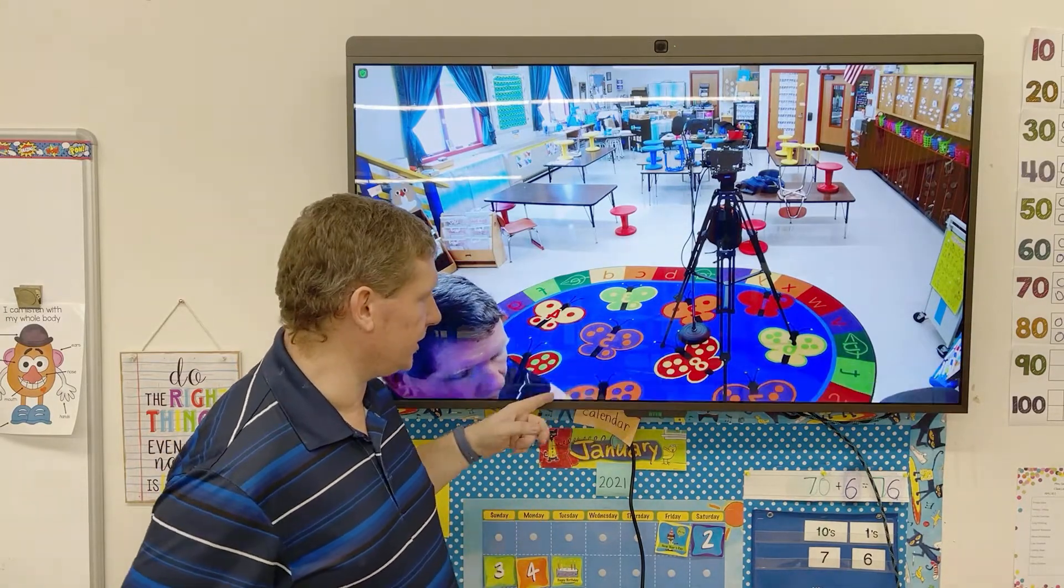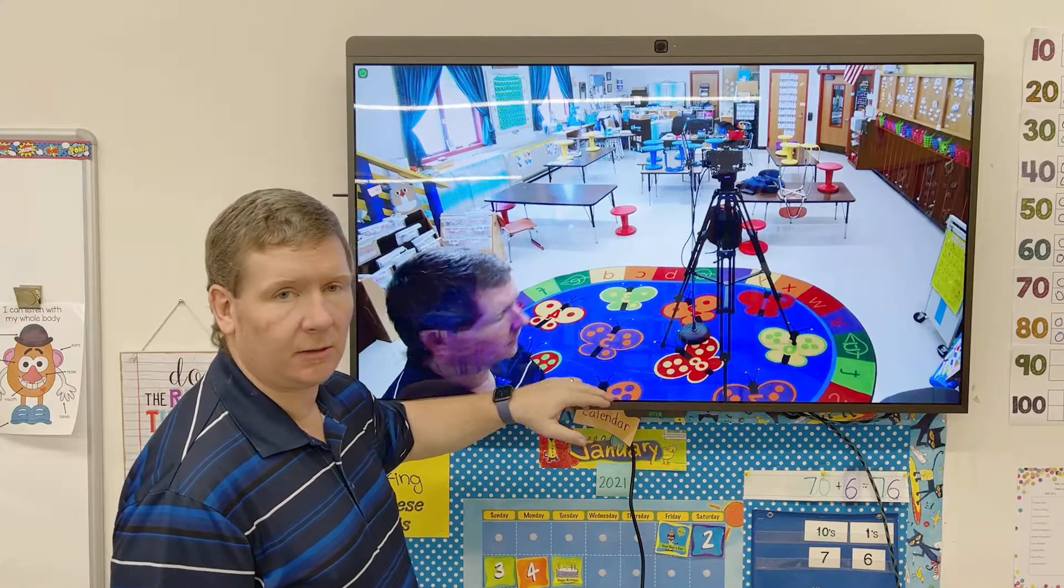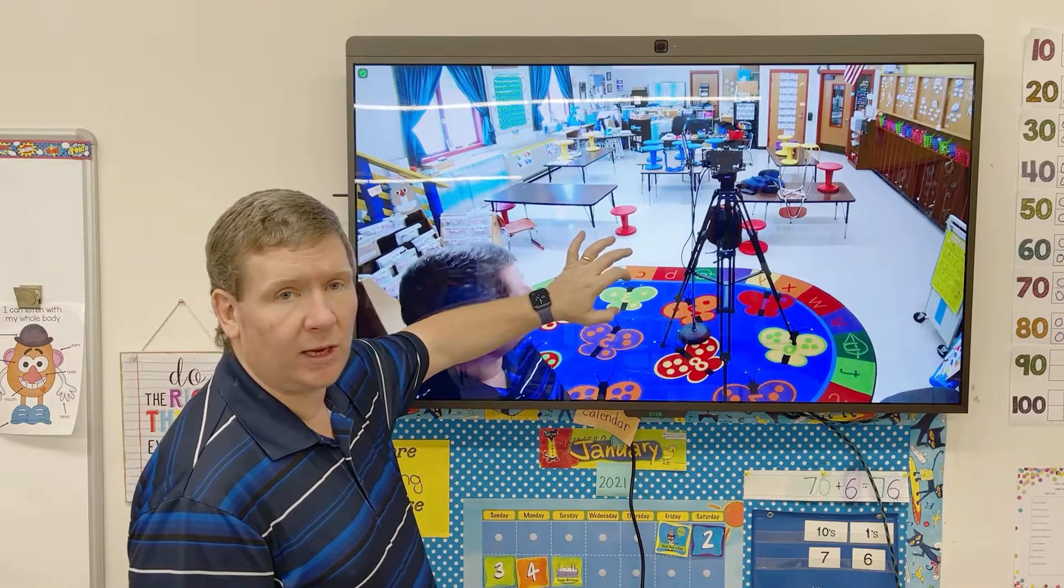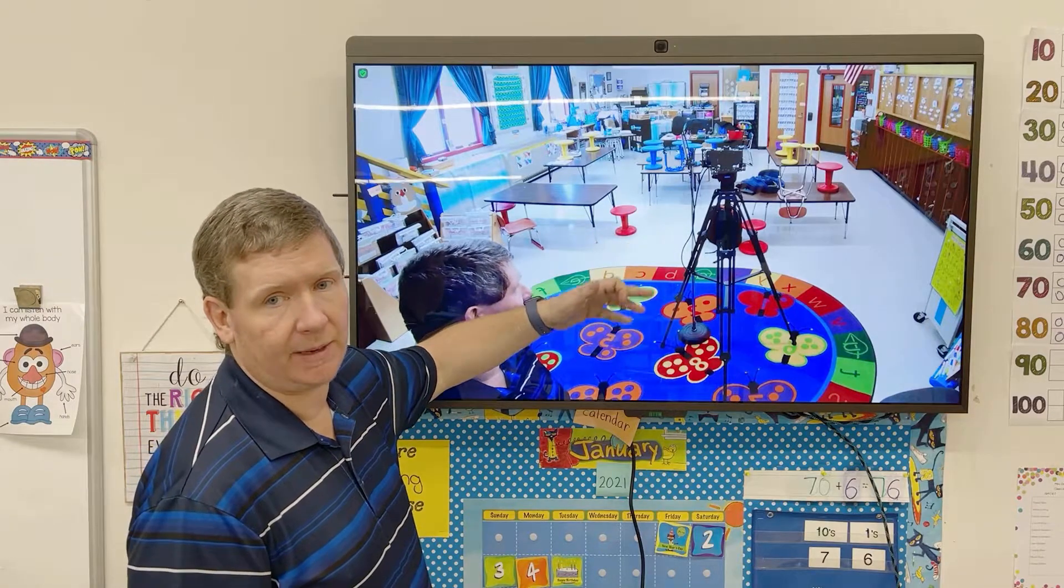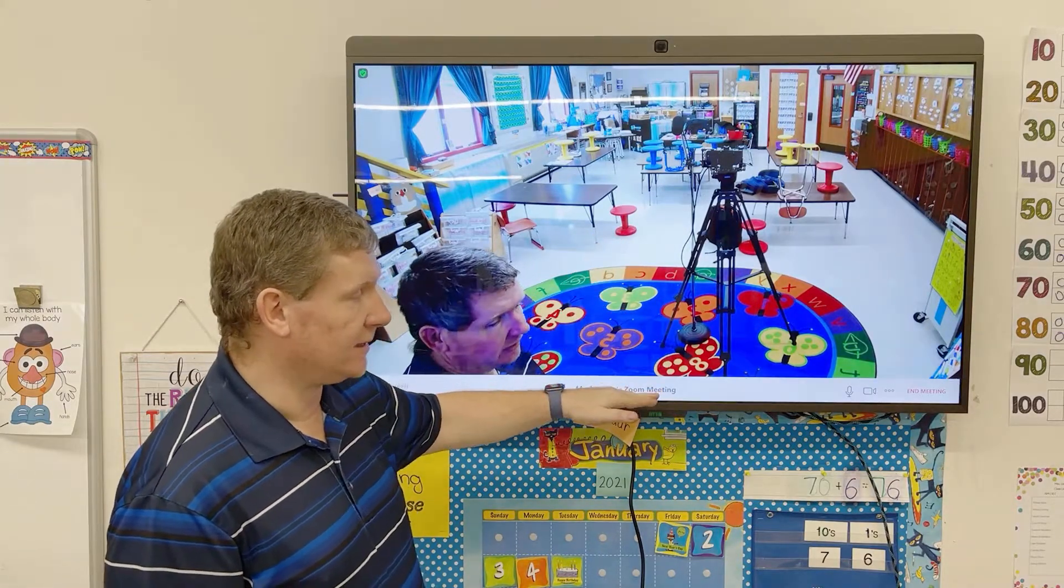So once you're in the meeting, you'll actually see the little display panel at the bottom show up. Again, if you want to see that little panel, you just tap the screen. If you want to hide it, it'll hide by tapping the screen. Now, once you tap the screen and see it,